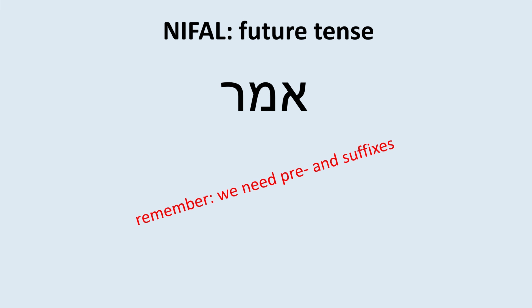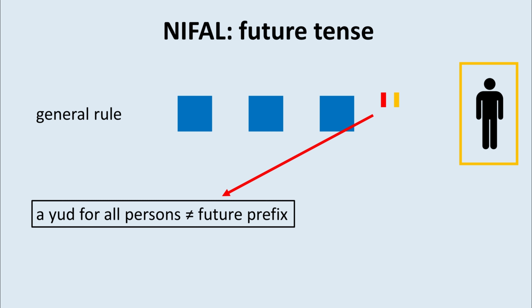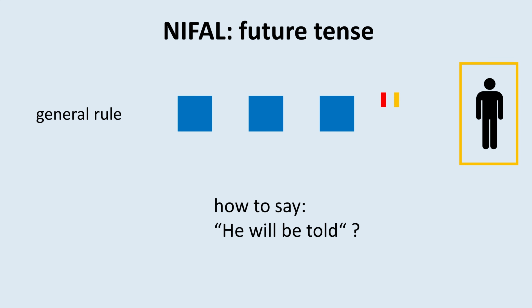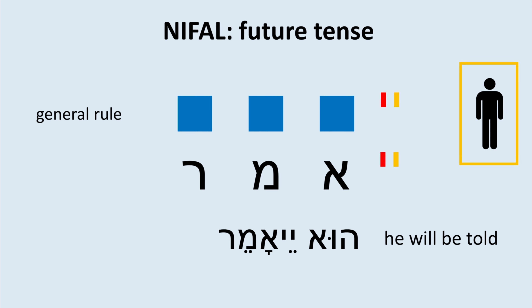Future tense. Remember, we need prefixes and suffixes. For the reference point — third person masculine singular — you will see two yuds in front. The first one, the red one, is for all persons and comes from le-hi, so we have to put that 'i' sound somewhere. The yellow one is the prefix for the third person masculine singular. So, he will be told: ye-amer.